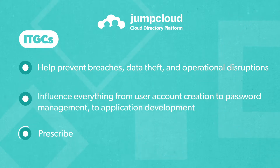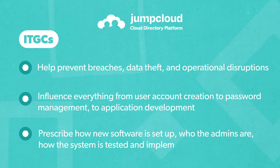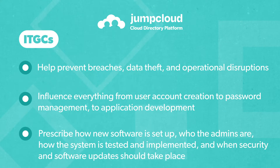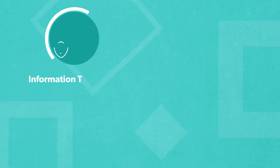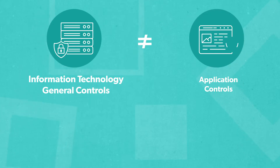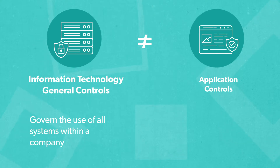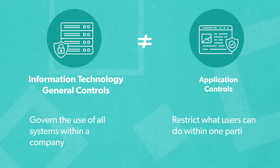They prescribe how new software is set up, who the admins are, how the system is tested and implemented, and when security and software updates should take place. One important thing to note is that Information Technology General Controls are not the same as Application Controls. ITGCs govern the use of all systems within a company, while Application Controls restrict what users can do within one particular platform.